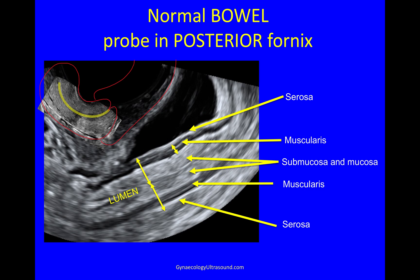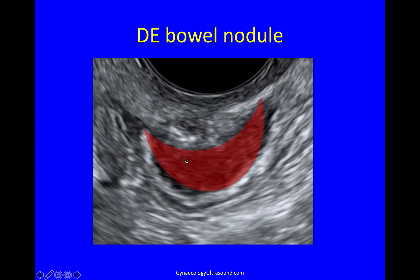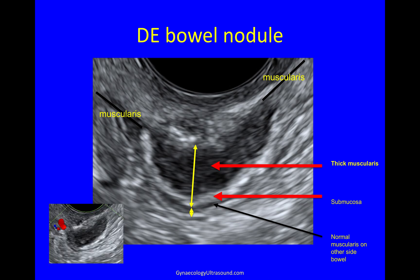Deep endometriosis only ever affects the anterior muscularis layer. It looks like this: normal muscularis coming into it, then this abnormal lesion, and then normal muscularis again. The nodule looks like this, with overlying normal mucosa and submucosa — you can see muscularis going into it and going out of it. You can also see normal muscularis on the other side with normal serosa, and the difference in bowel thickness there.